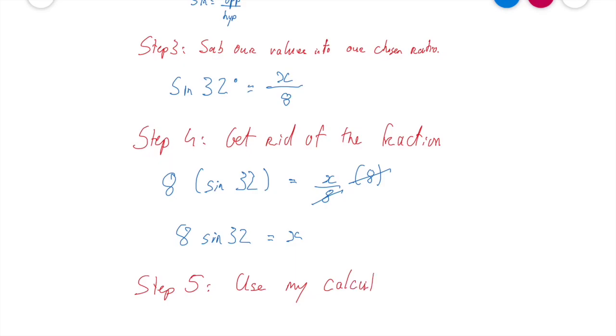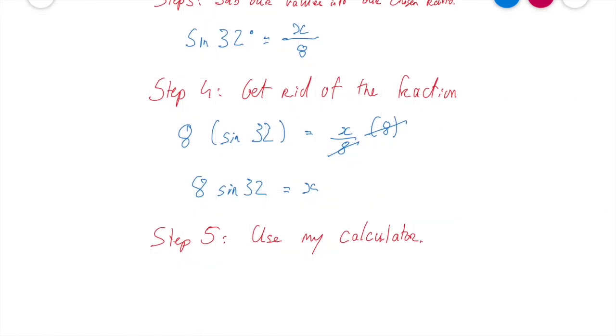So I need to put eight sine 32 into my calculator. And when I put that in, I should get a lovely long number that looks something along the lines of 4.239354114 and so on and so forth, is equal to x.